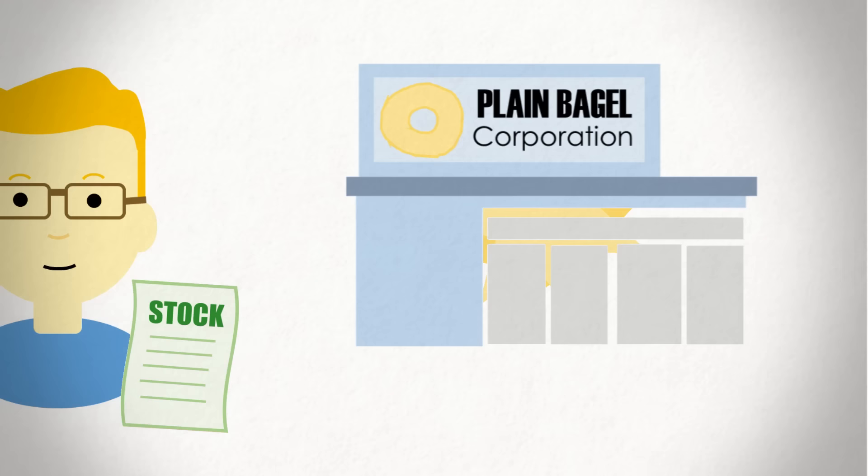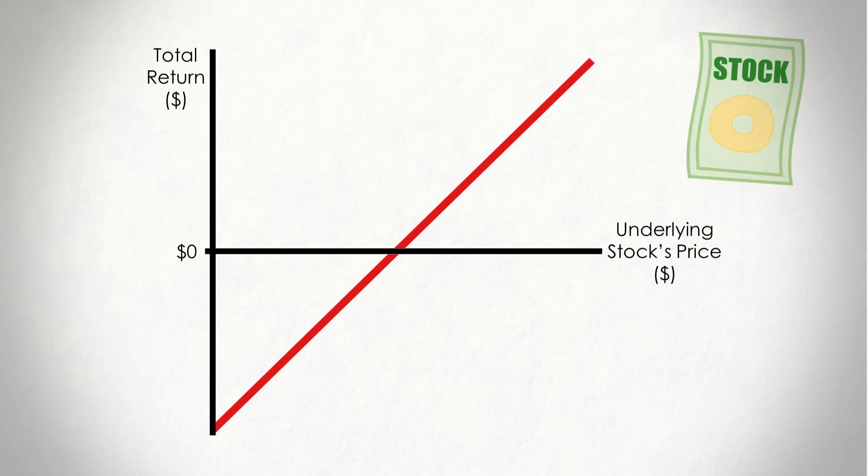One of the best ways to understand this difference is to visualize their returns. For example, let's say that you were looking at buying a stock of Plain Bagel Corp. If you buy the share, we can graph how your total return will be affected by movement in the stock's price. And, well, that's pretty boring. But it makes sense. Because you own the stock, any dollar increase in the stock's price will be a dollar added to your return. The slope crosses the x-axis at the price you paid for the stock, which we'll say is $30, meaning that if the price doesn't change, you make $0.